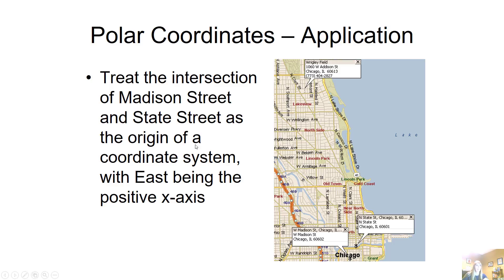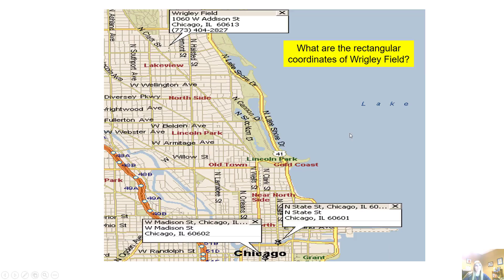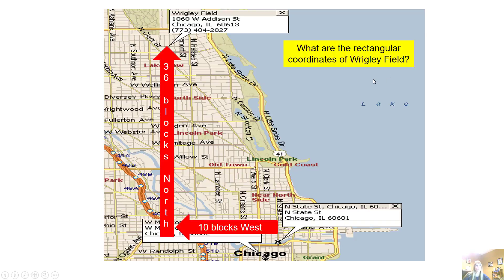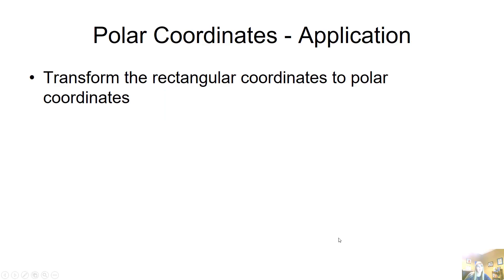With my coordinate system and the east, of course, being my x-axis. So I can look at this and say, well, then what are the coordinates? Well, if this point, the intersection is zero, so this said 10 blocks west and this said 36 blocks north, then from here I can say, well, I went negative because I went to the left, negative 10 and 36 would be my y-coordinate. So what I want to do from here is I want to actually transform this into my rectangular coordinates, which I just said are negative 10, 36.